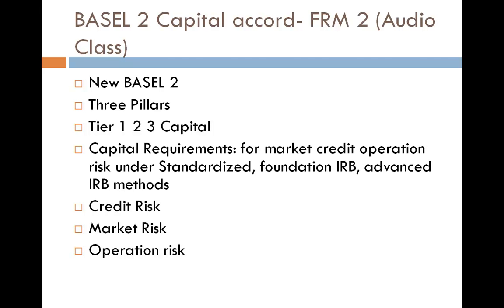There are basically three pillars in the Basel 2 Accord. The first pillar is minimum capital requirement: the bank should maintain a minimum level of capital to cover credit, market, and operational risk. Pillar 2 is supervisory review process: banks should assess the adequacy of capital relative to risk, and supervisors should review them. The third is market discipline: information should be adequately disclosed to allow market participants to assess a bank's capital adequacy. Greater disclosure will increase discipline in the market, leading to financial stability.